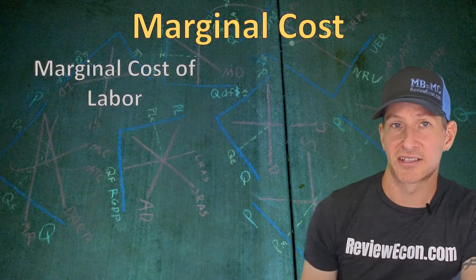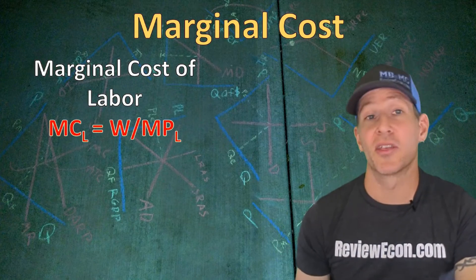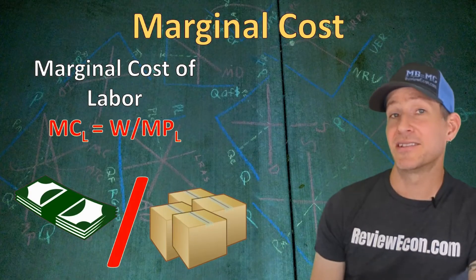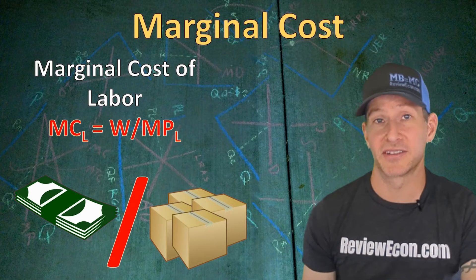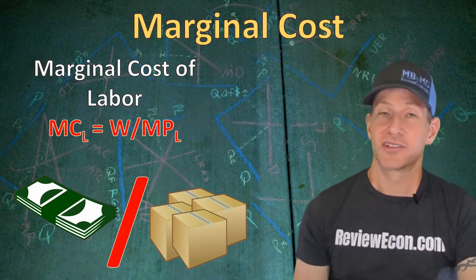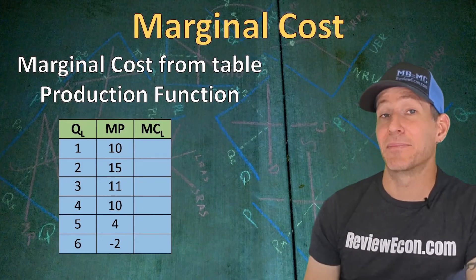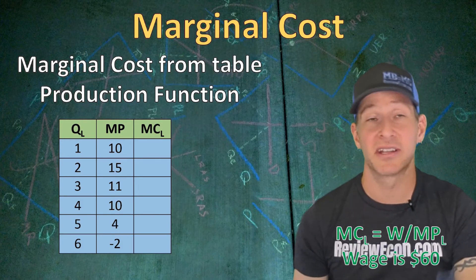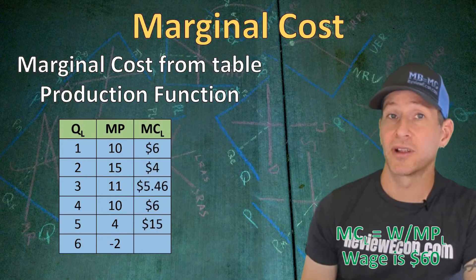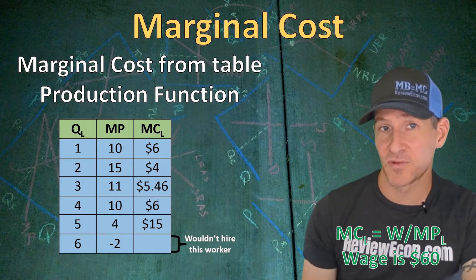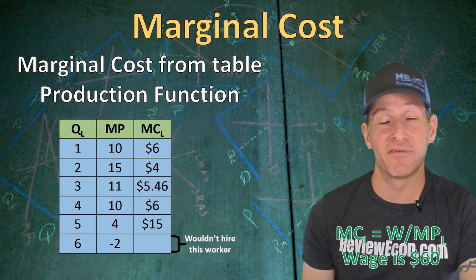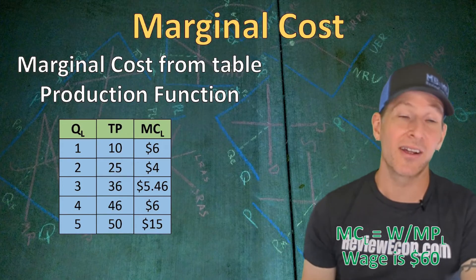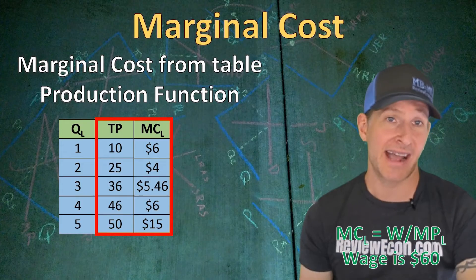The marginal cost of labor is the wage that workers are paid divided by the marginal product of those workers. If the wage for these workers is $60, we take that $60 and divide by the marginal product to get the marginal cost of the output for each worker. We're not going to calculate the marginal cost of the sixth worker's output because a rational firm would not hire a worker with a negative marginal product. To graph the marginal cost curve, we use total product numbers and graph them on the price and quantity axes.